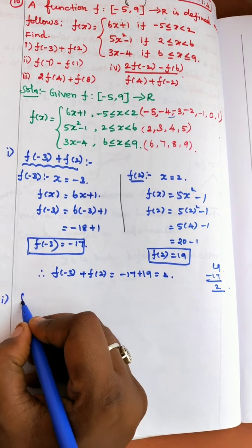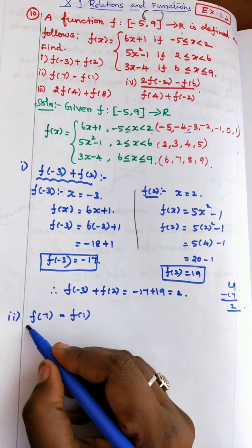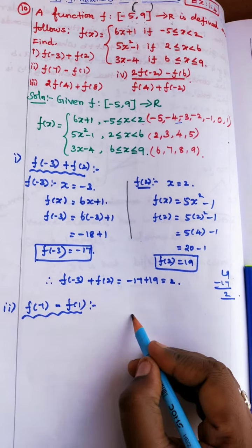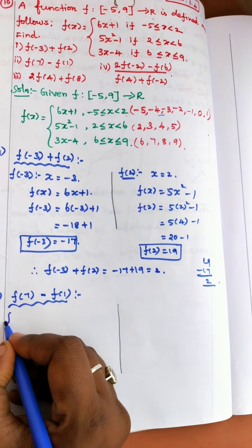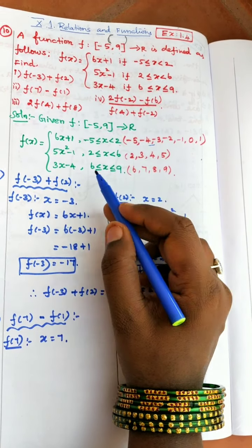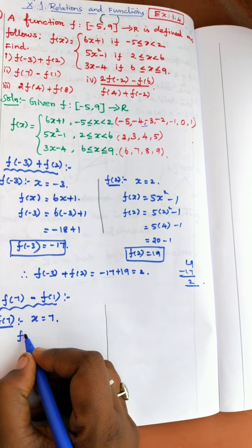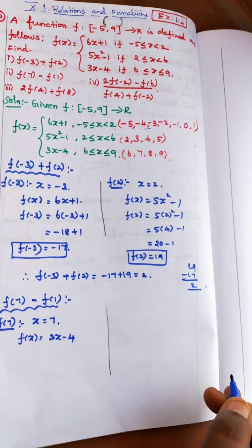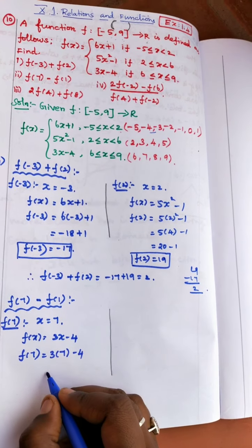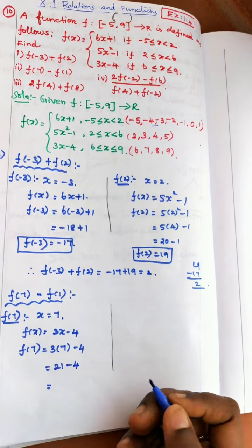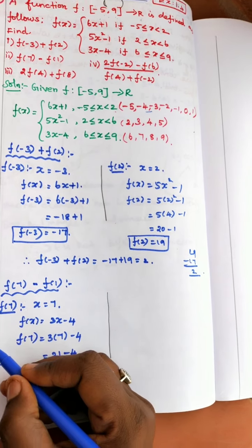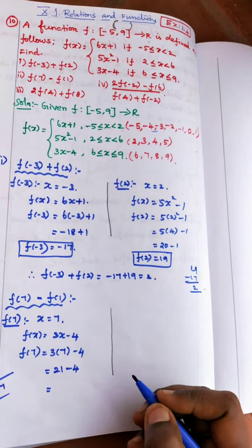Second point: find f(7) - f(1). To find f(7), x = 7 lies in the third interval. Therefore f(x) = 3x - 4. Substitute x = 7: f(7) = 3 × 7 - 4 = 21 - 4 = 17. So f(7) = 17.